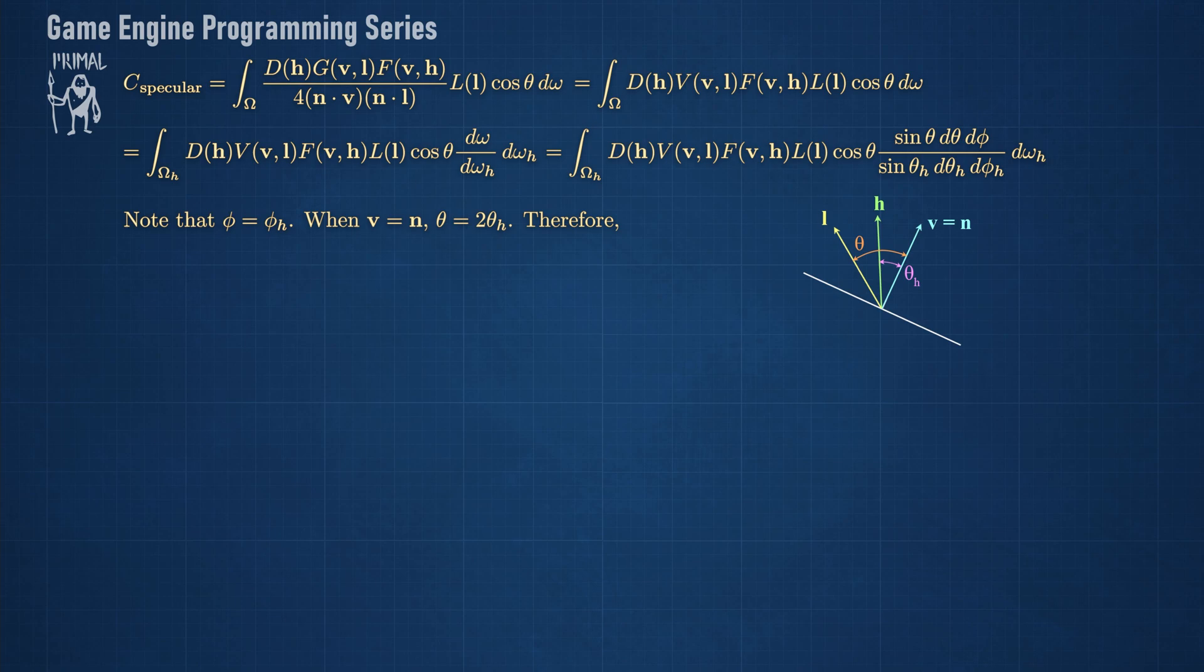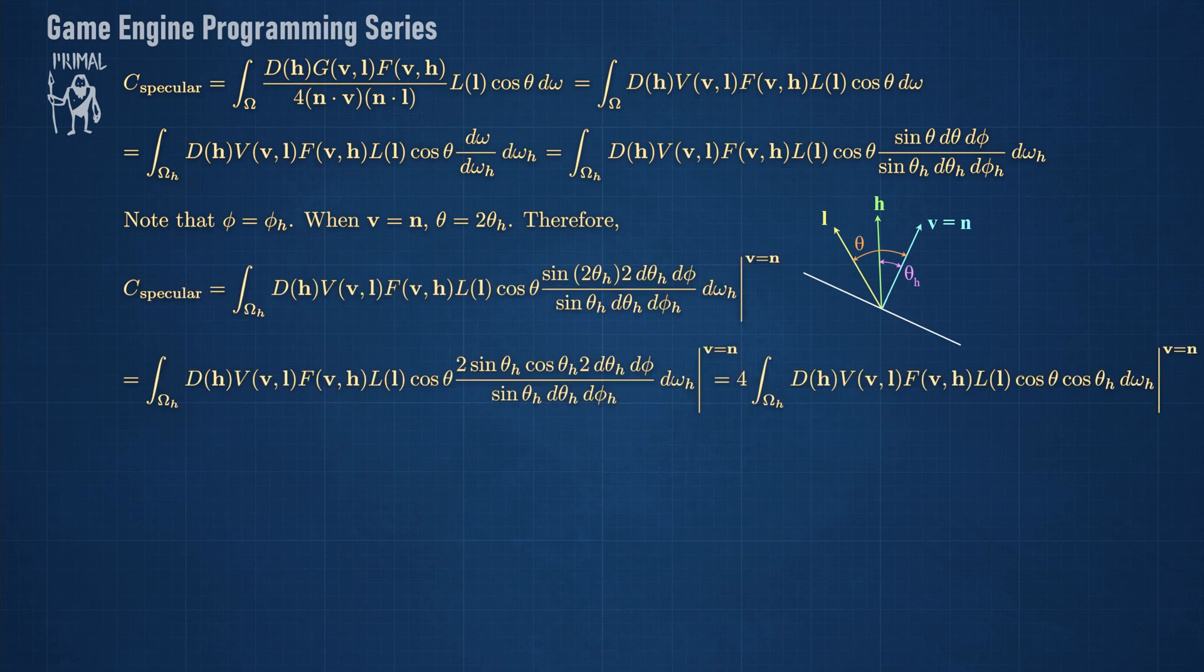We can express theta in terms of theta_h like this. Using a trigonometric identity, we can write sine of 2 theta_h as 2 times cosine theta_h sine theta_h. Now all these terms cancel out and we are left with this integral.